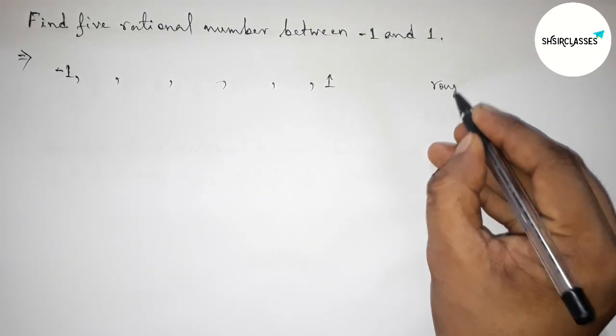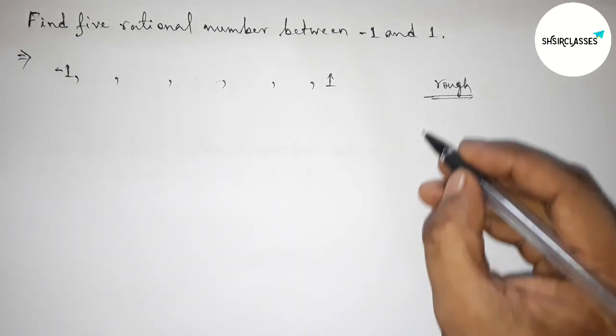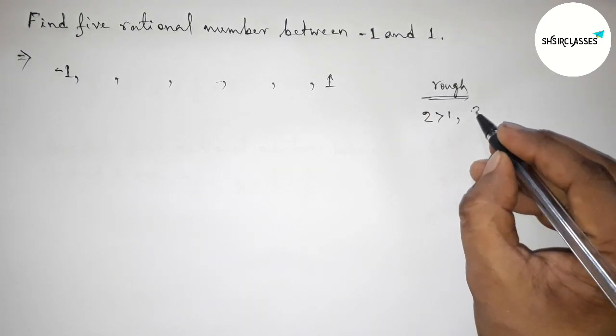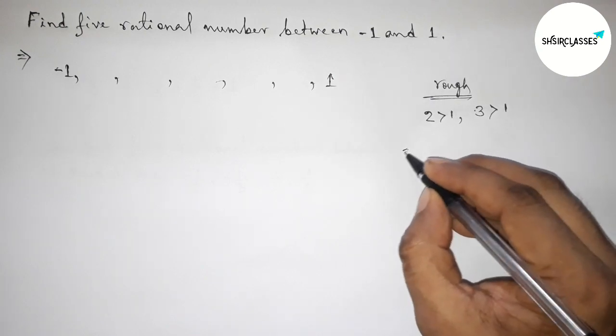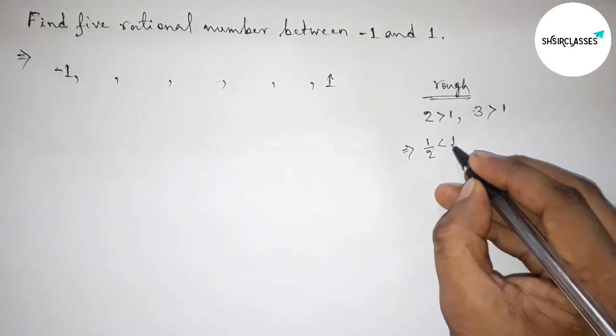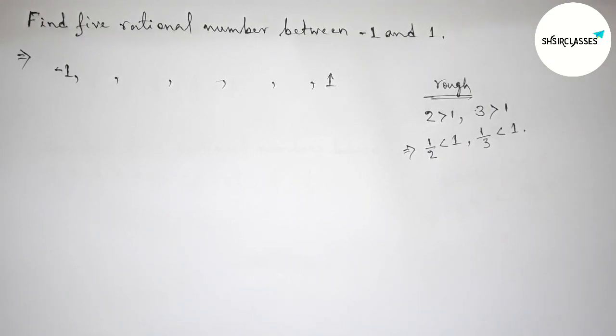So first of all, taking two numbers. First taking two which is greater than one, then three which is greater than one. So next, inverse of both numbers. So inverse of two, that is one by two, this is always less than one. And inverse of three, that is one by three, always less than one.